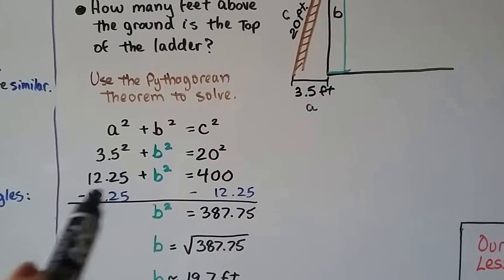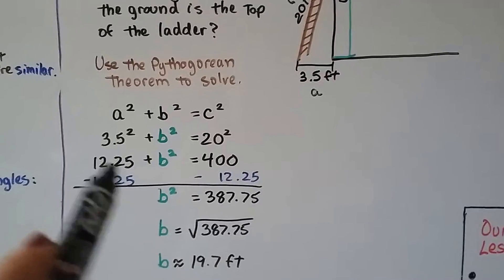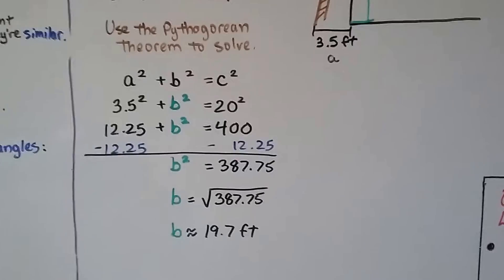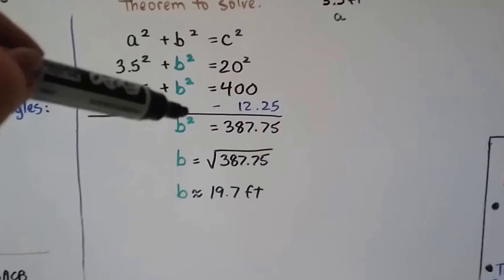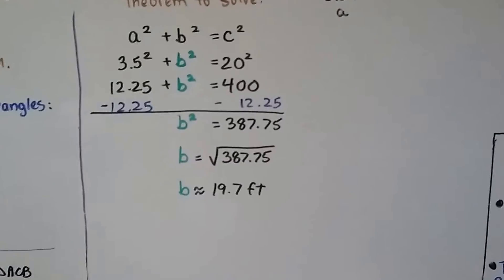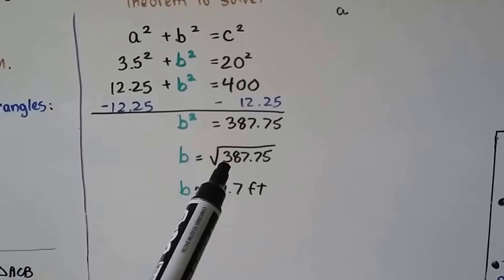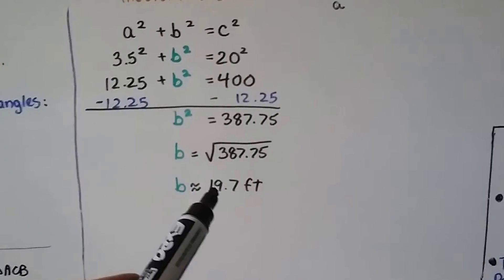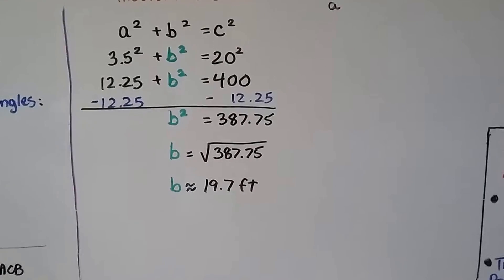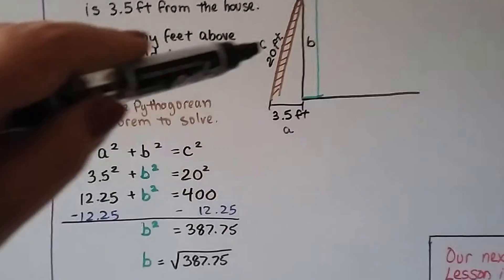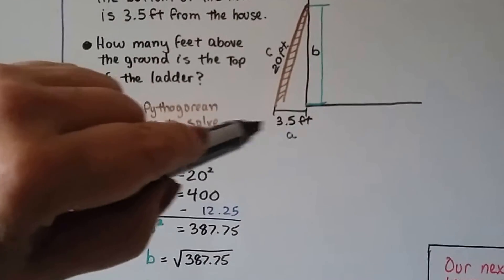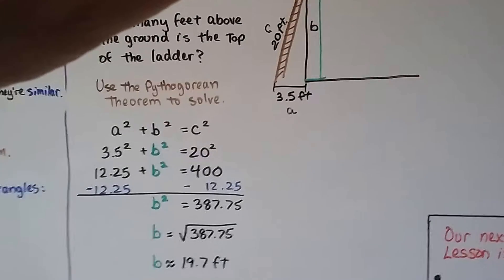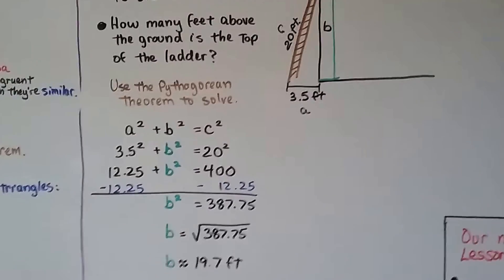Now we've got this equation. We could subtract 12.25 from each side and get b squared is equal to 387.75. We can take this little 2 exponent off by putting a radical sign around that side. So now B is equal to the square root of 387.75. We pull out our calculator and we see it's approximately 19.7 feet. So that's how tall it is. So by it being 3.5 feet away from the wall, the height of the ladder went down 3 inches.